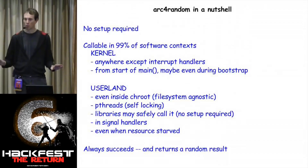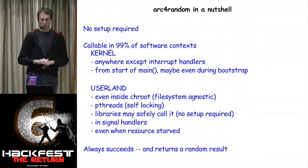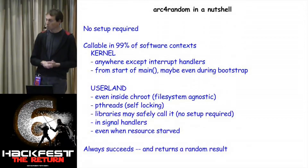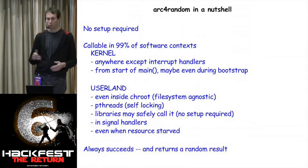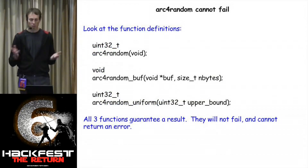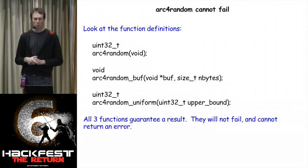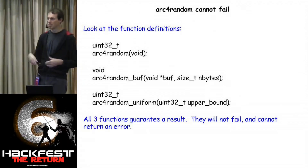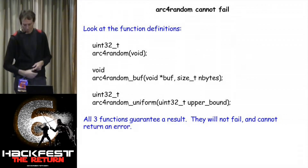In a nutshell, the API requires no setup — you don't initialize it at the start of your program or in the kernel, it's just there. In the kernel it's callable anytime except in an interrupt handler. In userland you can call it inside chroot, inside threads, inside any library, in a signal handler, when you're out of file descriptors — there's no reason not to call it. There are three variants: one that returns a 32-bit value, one that fills a buffer with random data, and one with uniform distribution so people don't misuse modulus arithmetic and introduce bias. These functions always return success — they cannot return an error.